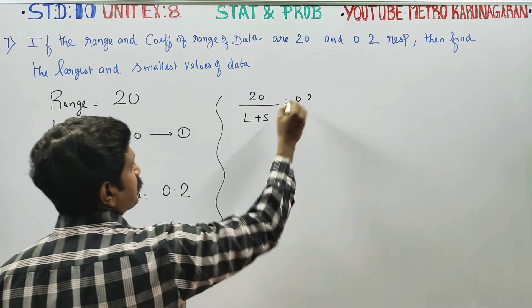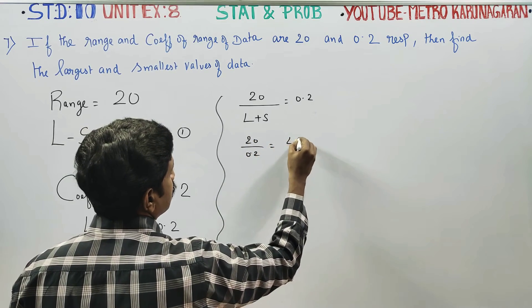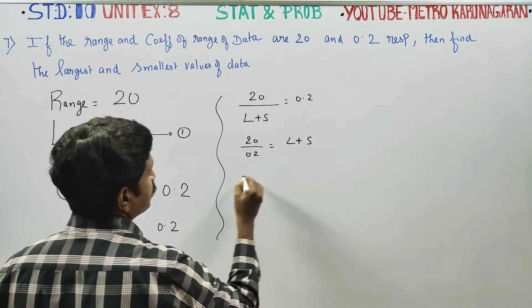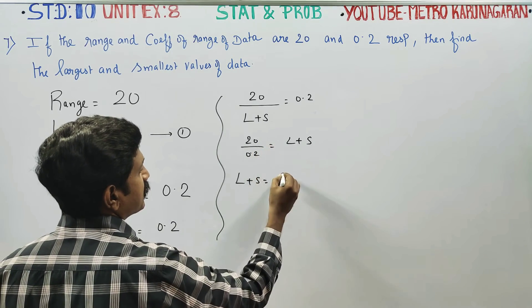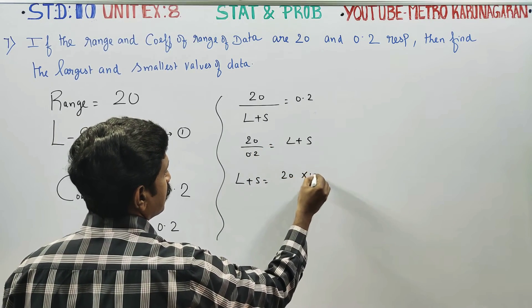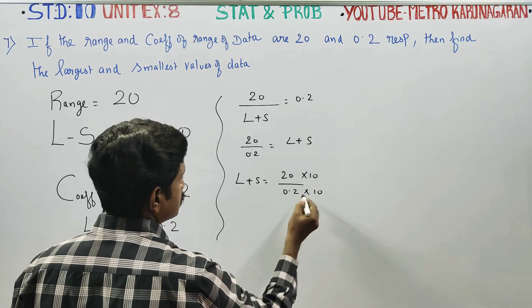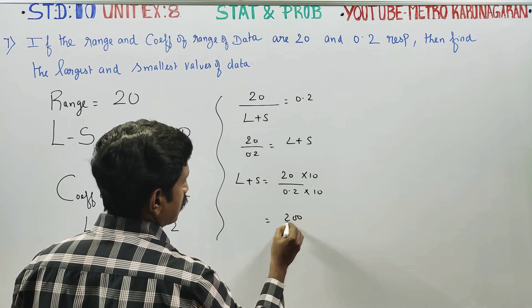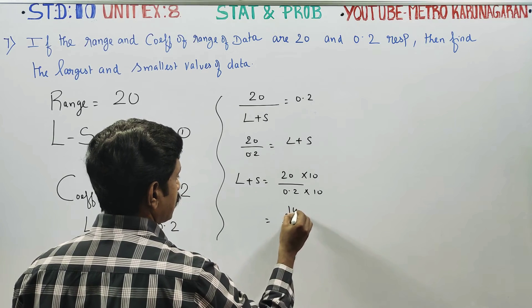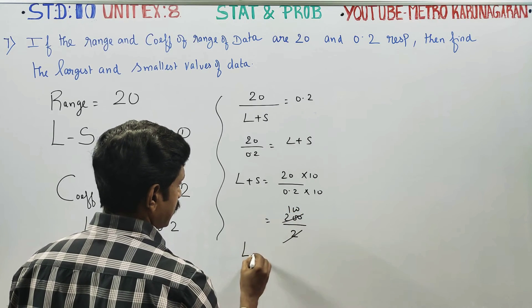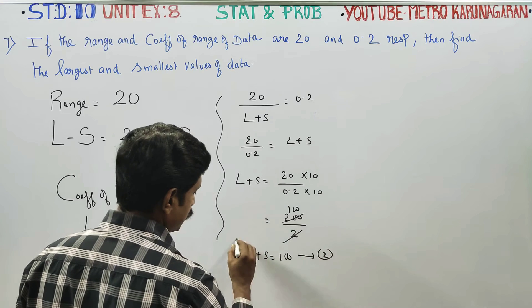Cross multiplying: 20 divided by 0.2 is equal to L plus S. This gives us L plus S equal to 100. This is equation number 2.